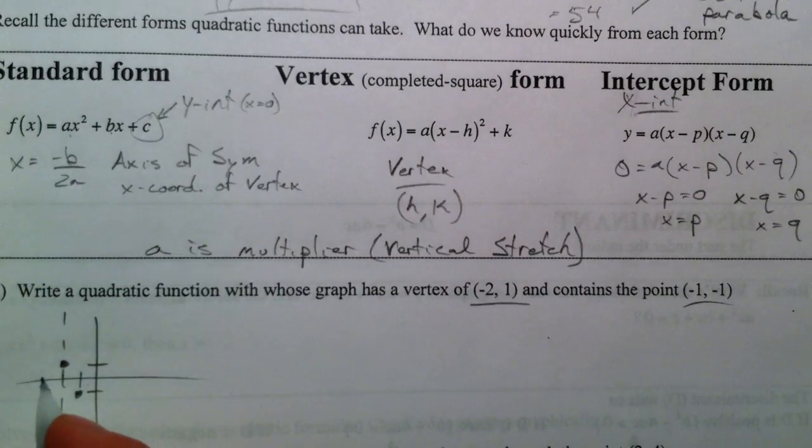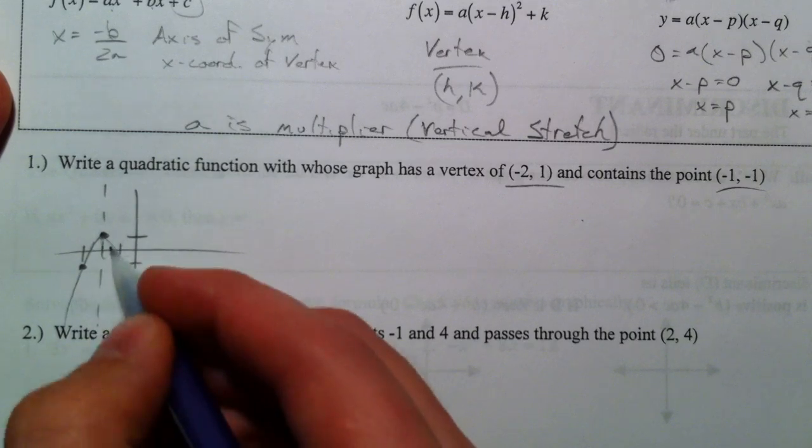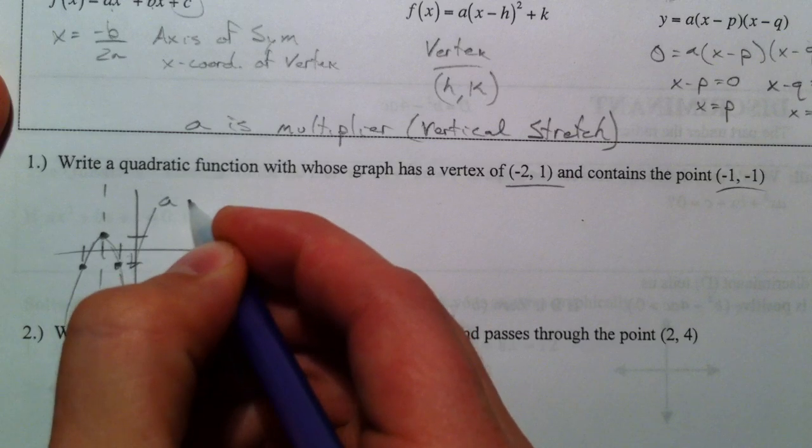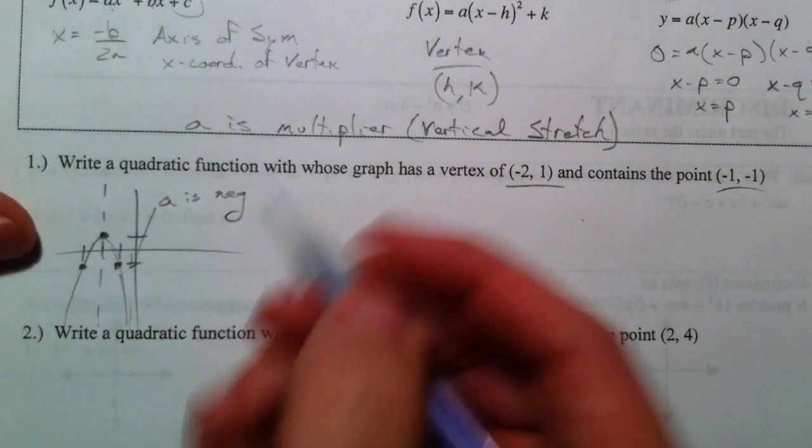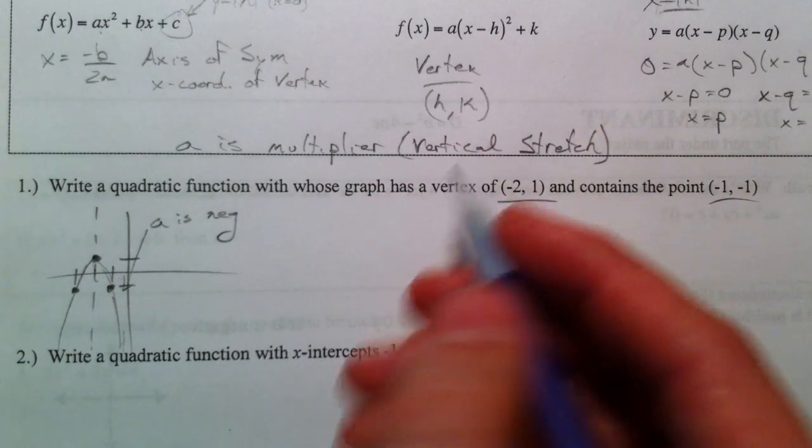I have this axis of symmetry. I could always have another point reflected over here. I know my parabola has to open down. So it's good to know that a has to be negative. But let's use, since we know our vertex, let's use our vertex form.